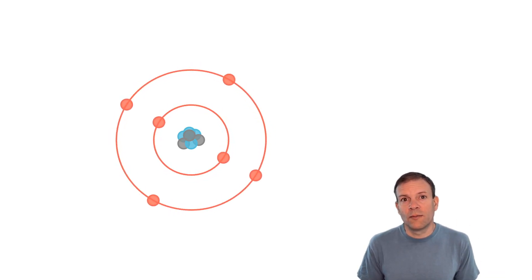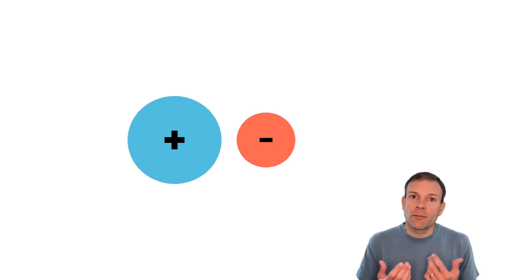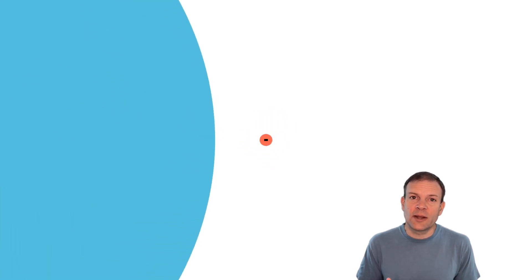But the first thing you should know is that when you think about protons and electrons, usually we might think of them as being equal in size. It turns out that protons are actually 2,000 times bigger than electrons.